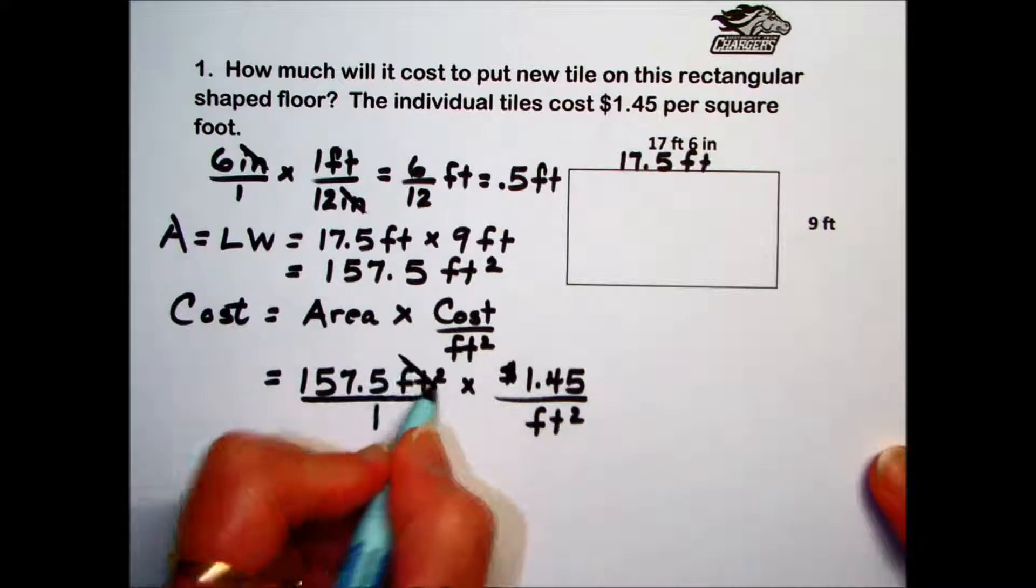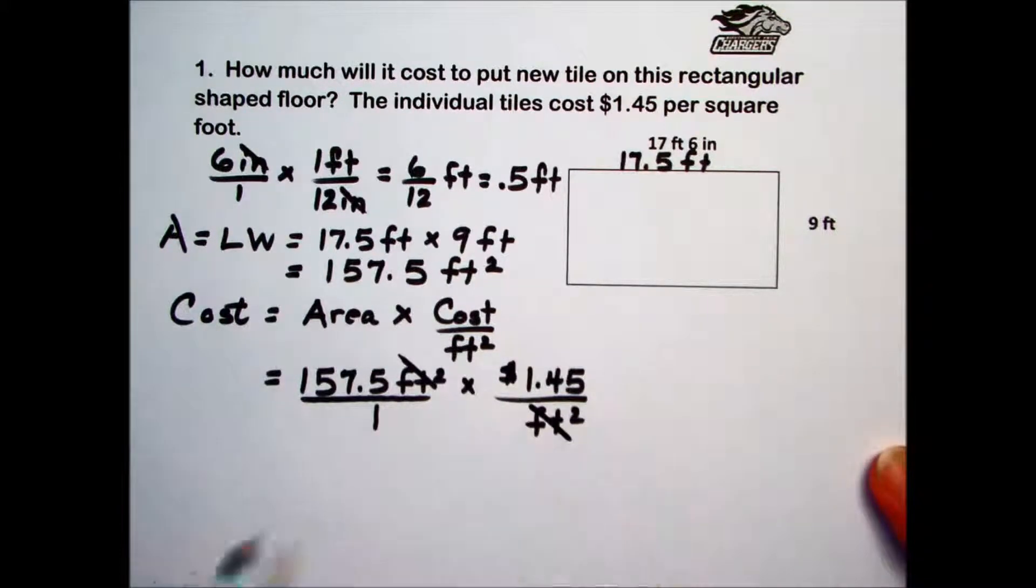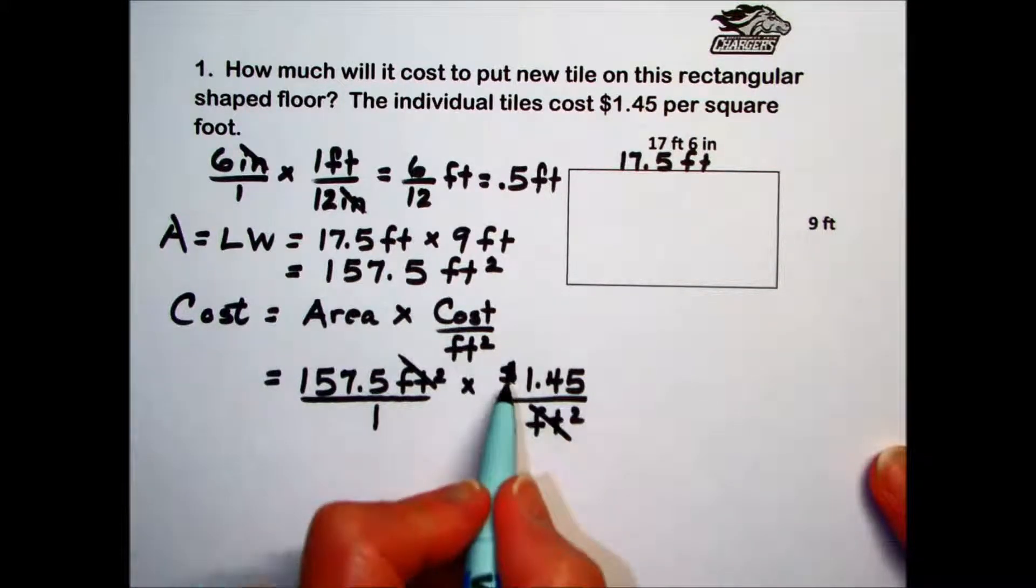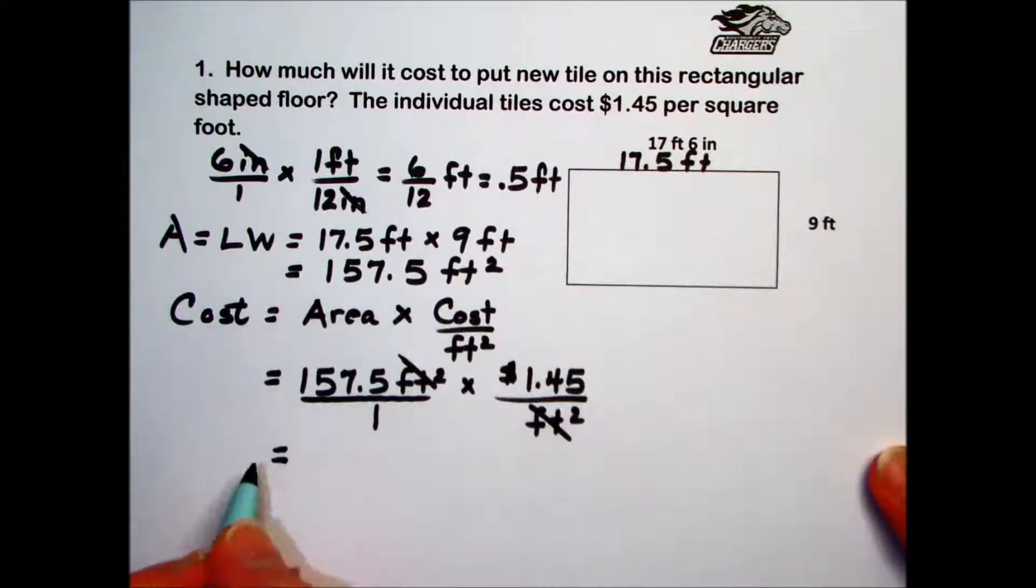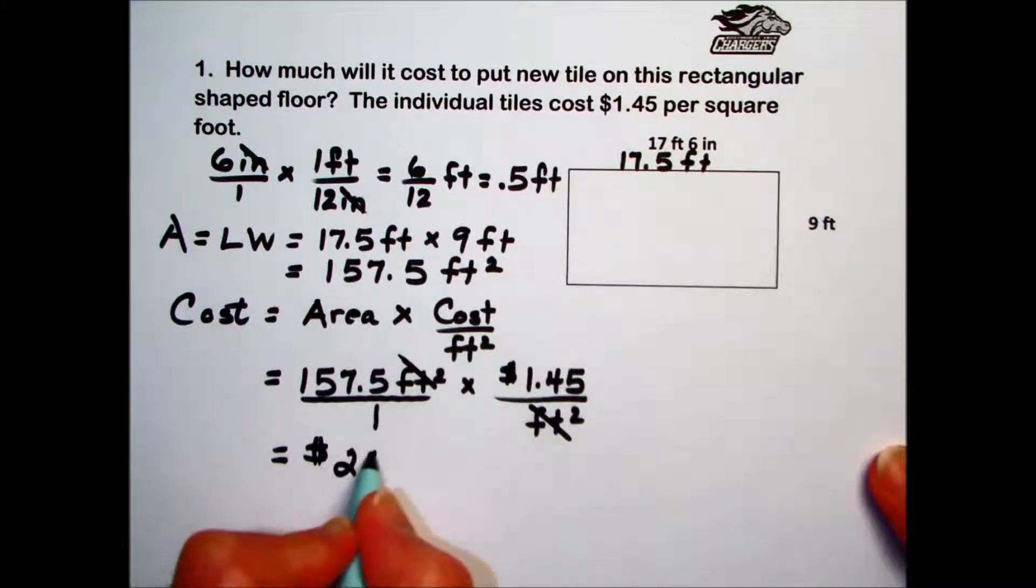The feet squared in the numerator cancel out the feet squared in the denominator, leaving us with money. That's a good indication we're in the right direction as far as answering this question for cost. Multiplying those values together, we get 228.375.